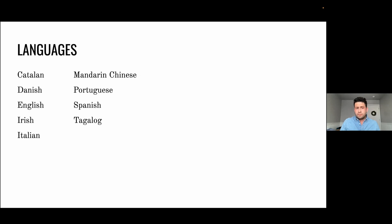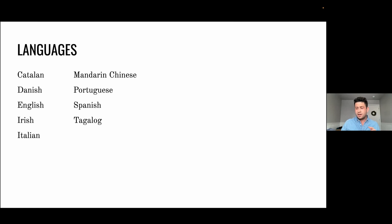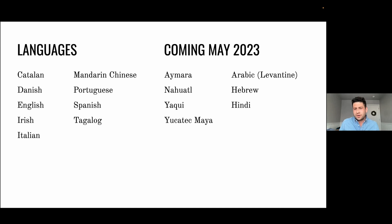These are the languages that we currently have documents for: Catalan, Danish, English, Irish, Italian, Mandarin Chinese, Portuguese, Spanish, and Tagalog. We've been at work all year and we're going to soon have some more languages to launch in May — a subset of indigenous languages of Latin America including Aymara, Nahuatl, Yaqui, and Yucatec Maya, and also languages with gender on verbs in addition to other grammatical categories: Arabic with focus on the Levantine dialect, Hebrew, and Hindi.